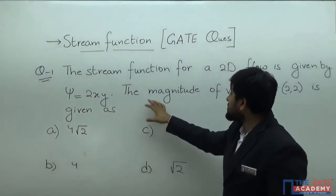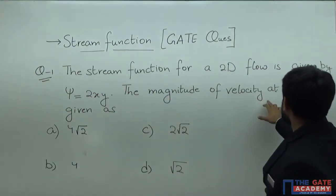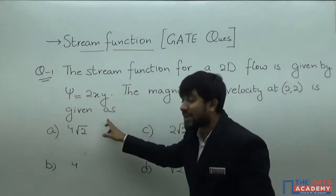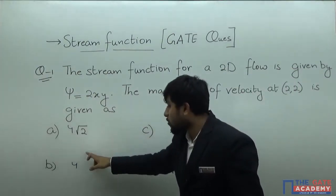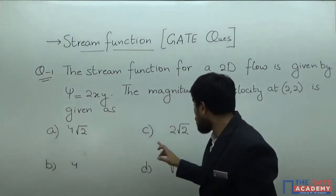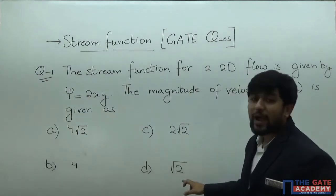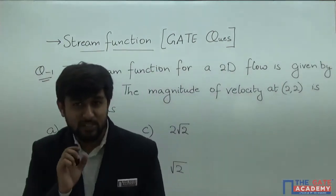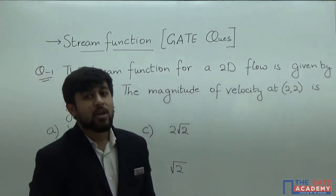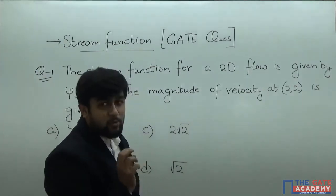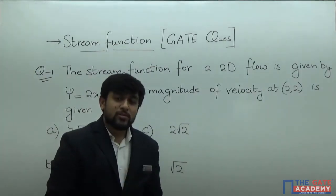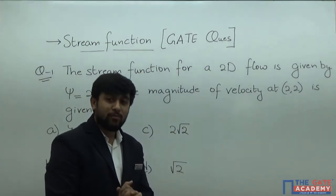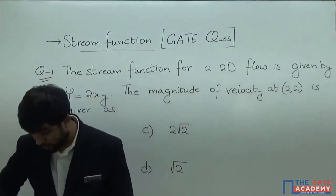What is the magnitude of velocity at point (2,2)? The options are 4√2, 4, 2√2, and √2. So basically they have given us the stream function and at a particular point (2,2) they want us to find out the magnitude of the velocity. Let us solve this question.